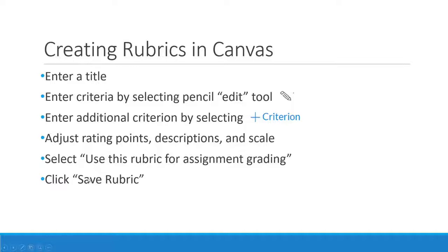You'll start adding the criteria necessary for your assignment, exam question, or whatever the overarching goal is for this rubric. We'll talk through how to adjust rating points and descriptions for those points. You can have different scales for different criteria. You can also select to use the rubric for assignment grading, and when you click through your rubric it assigns the grade directly to your student through SpeedGrader. Last, hit save rubric.